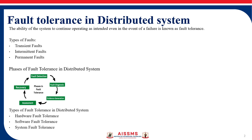Third, we have permanent faults. These faults persist until they are repaired. They can be caused by physical damage. Once these faults occur, they affect the system operation until the faulty component is replaced or repaired. These are the three types of faults.